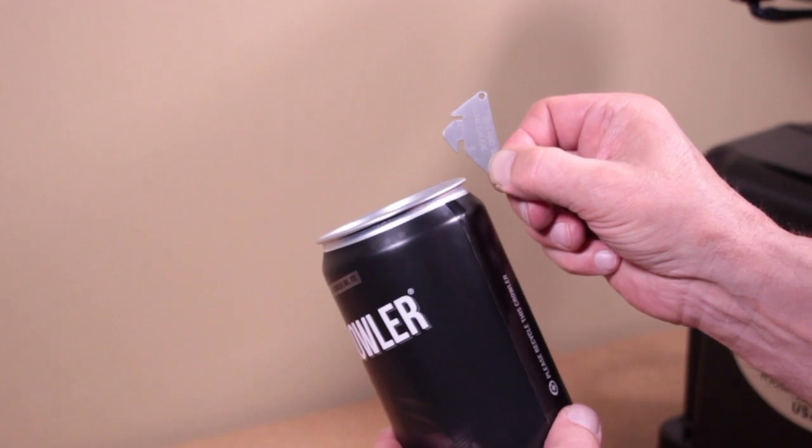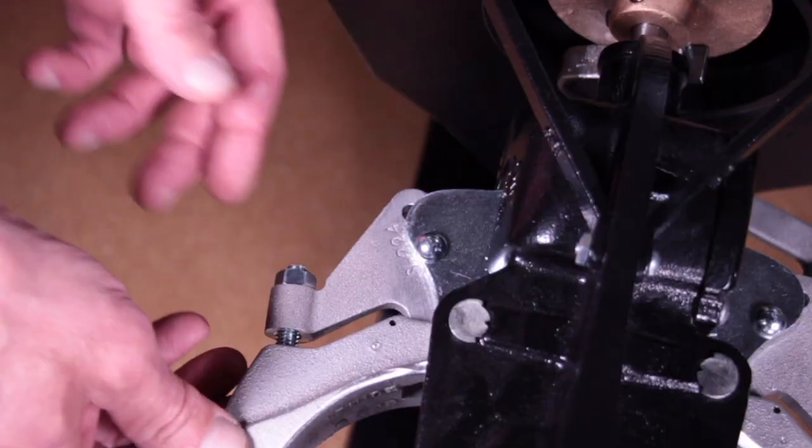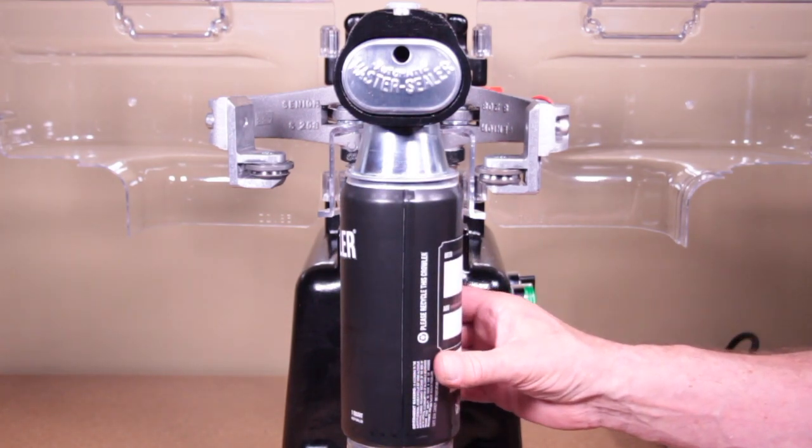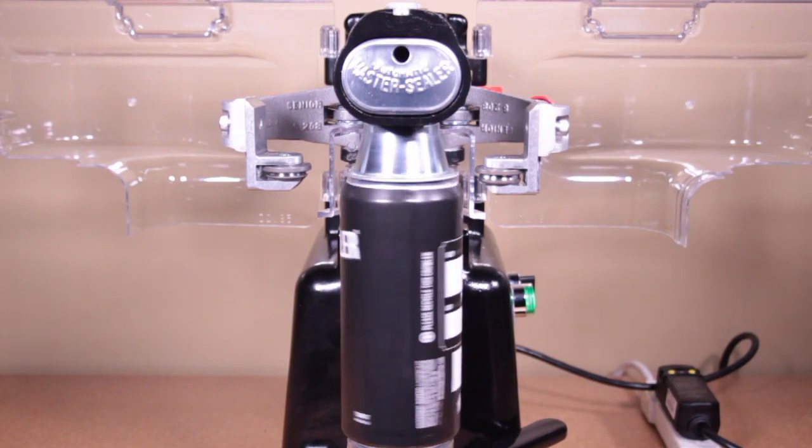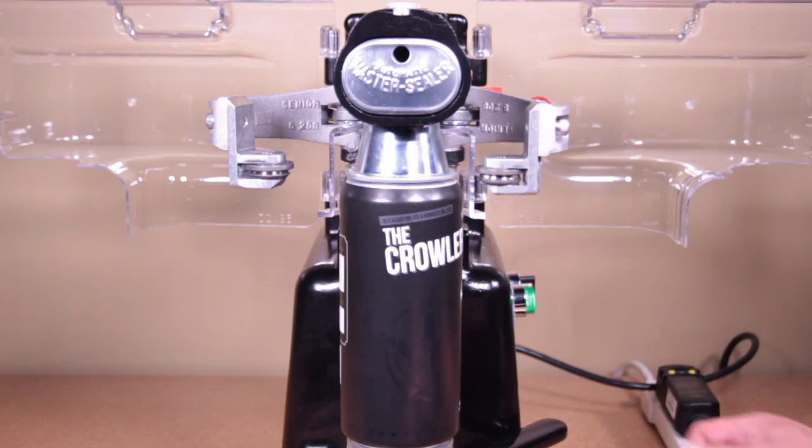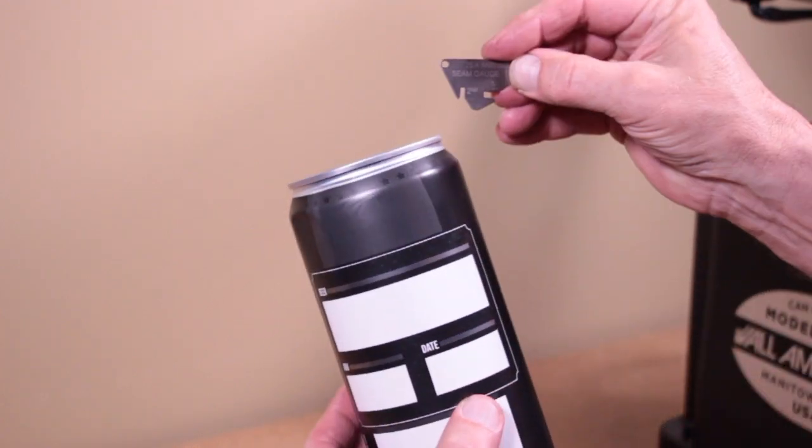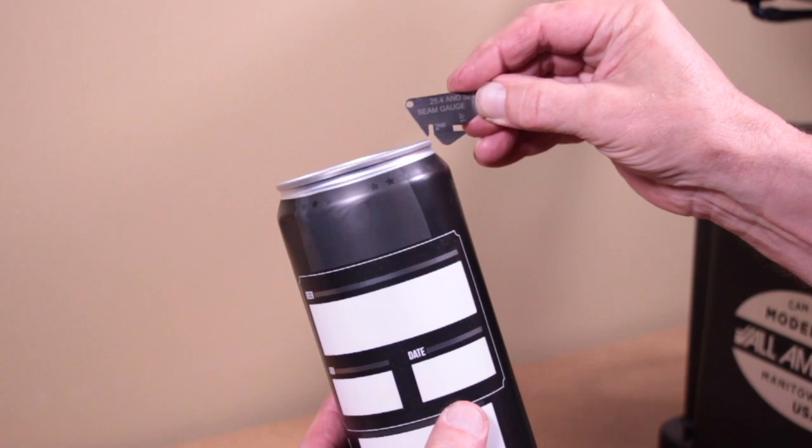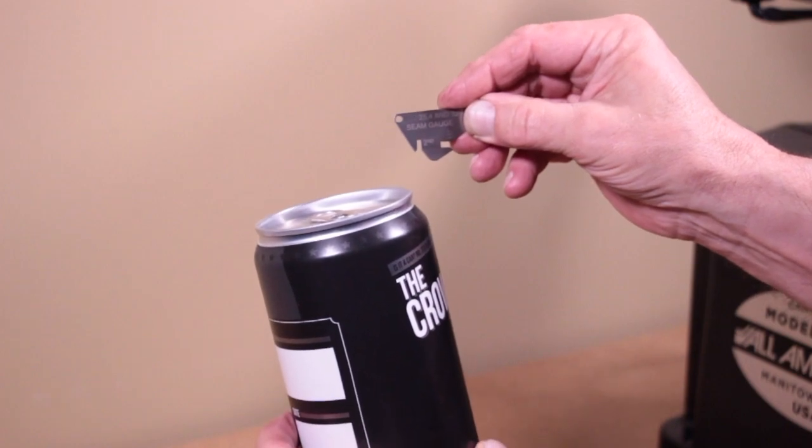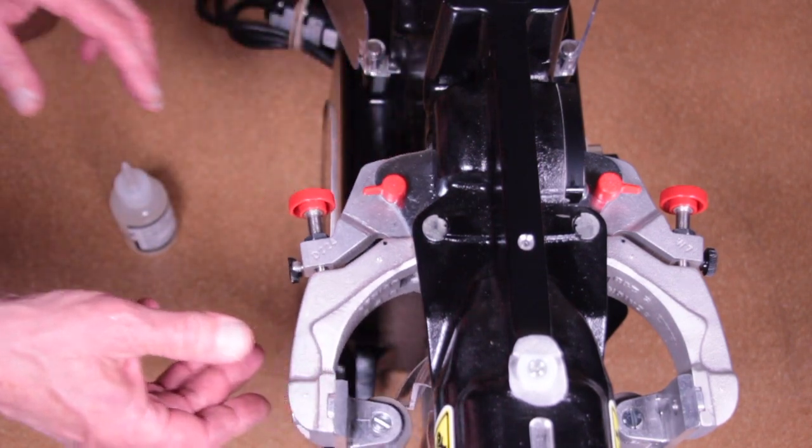Now let's move on to checking that our second seam operation is in spec. To do this, follow the same steps you did for the first seam operation, except this time we will remove the first seaming arm pins so that only the second seaming roller touches the can. You will want to use a can that has already been through the first seaming operation and is in spec. Use the more narrow slot on your seam gauge marked second to check in four spots around the circumference of the lid. This should fit snugly in one spot and clear the rest.